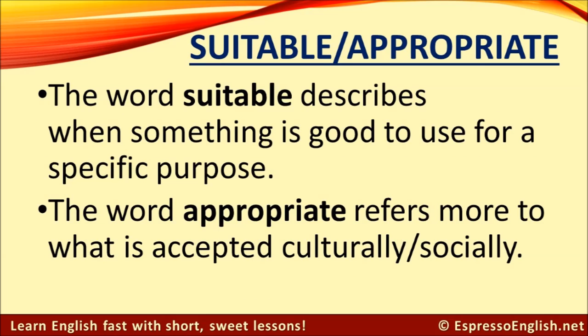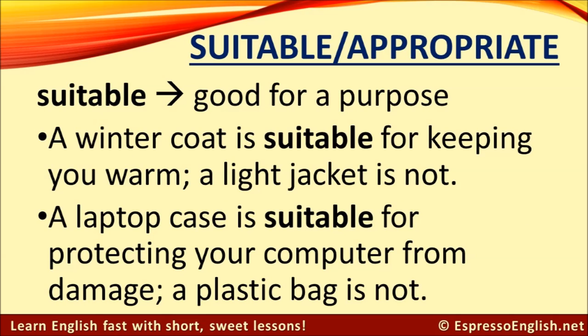Let's turn our attention to suitable and appropriate. The word suitable describes when something is good to use for a specific purpose, and the word appropriate refers more to what is accepted culturally and socially. Here are some examples of things that are suitable — they are good for a purpose. A winter coat is suitable for keeping you warm; a light jacket is not suitable. A laptop case is suitable for protecting your computer from damage; a plastic bag is not suitable for this purpose.